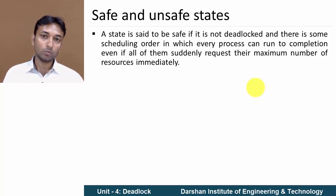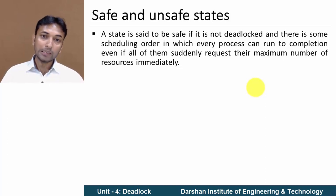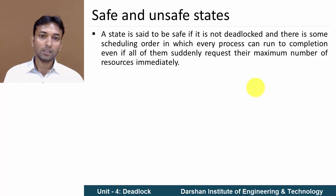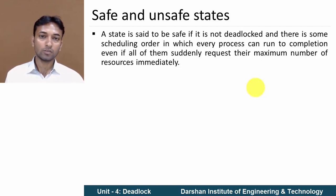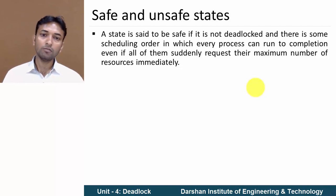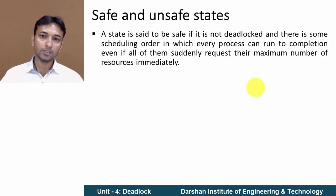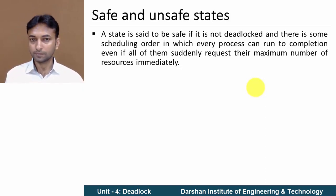A state is said to be safe if it is not deadlocked and there is some scheduling order or sequence in which every process can run to completion, even if all of them suddenly request the maximum number of resources immediately. Simply put, if there is no deadlock then the state is safe; if there is deadlock then the state is unsafe.